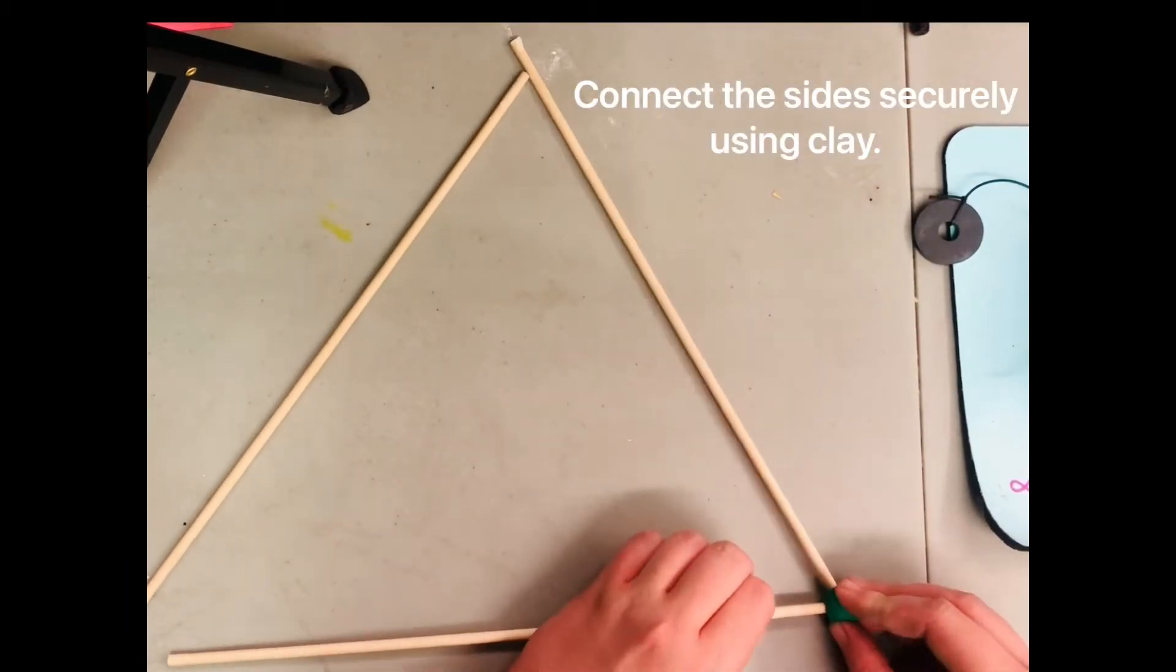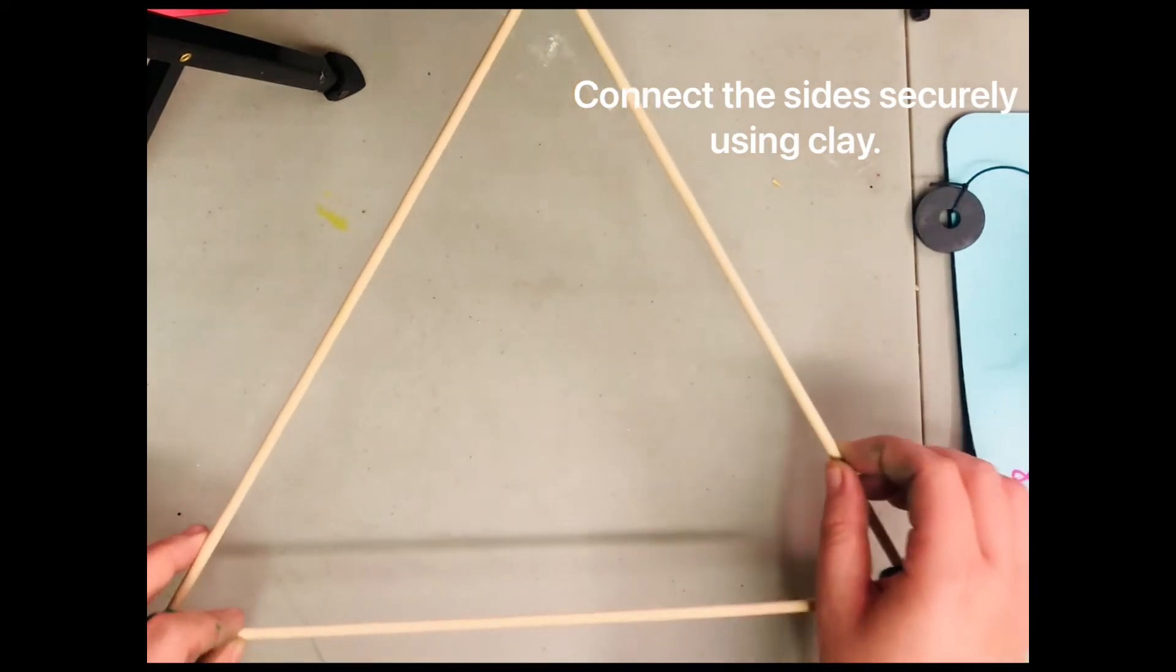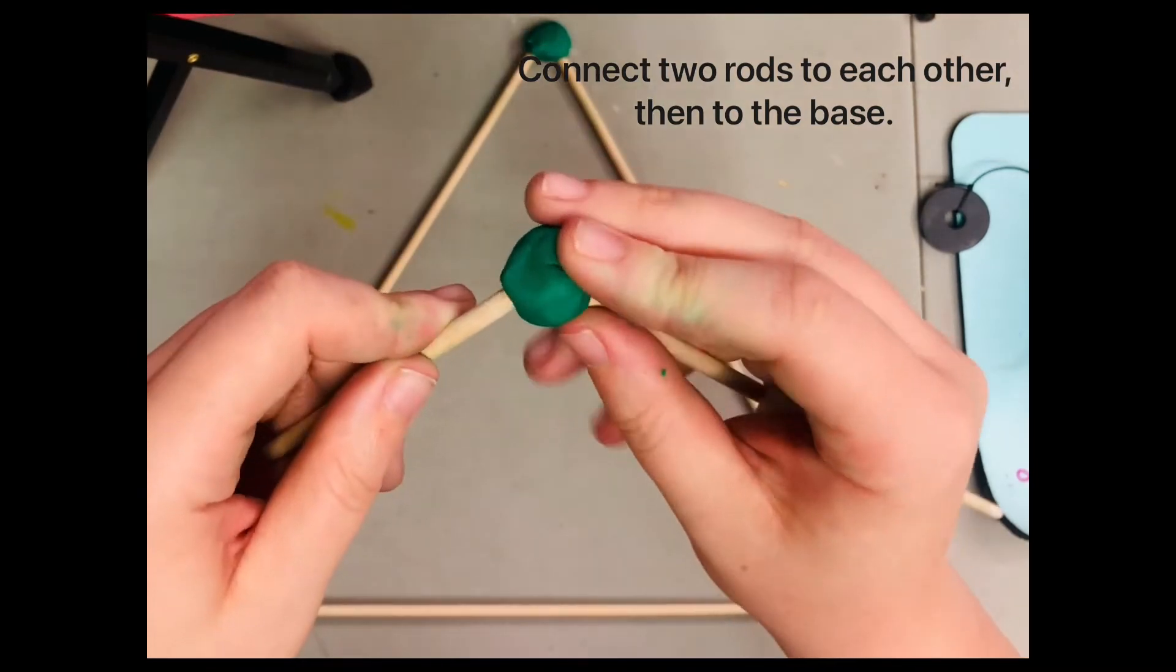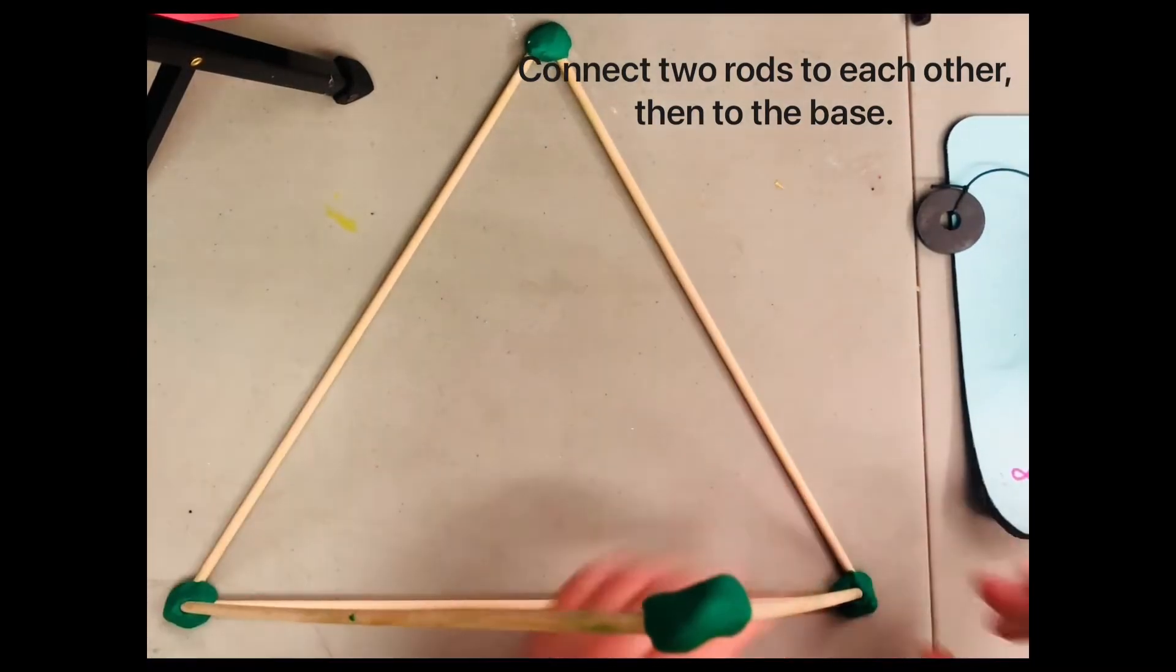Connect the sides using our modeling clay and make sure they are secure. Then we're going to connect two dowels to each other at the top and then connect them to the bottom on the base.